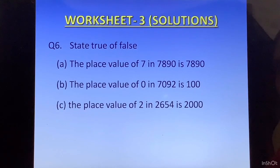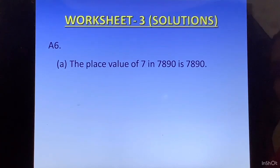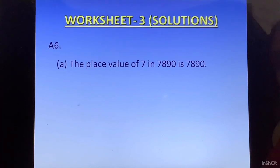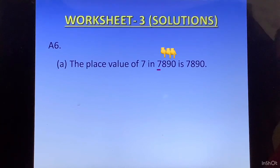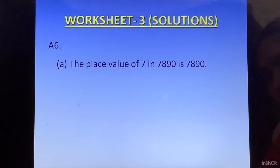Question 5 — State true or false. Part A: The place value of 7 in 7890 is 7890. This is false. To find the place value of 7, we convert everything to its right to 0, so the place value becomes 7000. Therefore it is false.